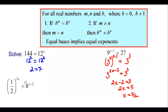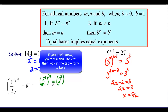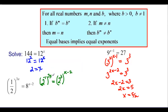For the next one with one-half to the 3x equals 8 to the (x minus 2): one-half can be written as 2 to the negative first, and 8 is 2 to the third. Multiplying exponents, we get 2 to the negative 3x equals 2 to the (3x minus 6). Since the bases are equal, negative 3x equals 3x minus 6. Subtracting 3x from both sides gives negative 6x equals negative 6, so x equals 1.